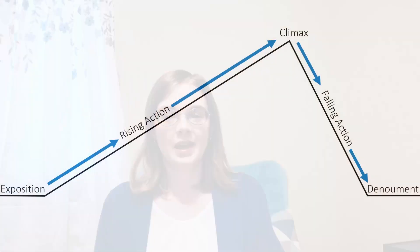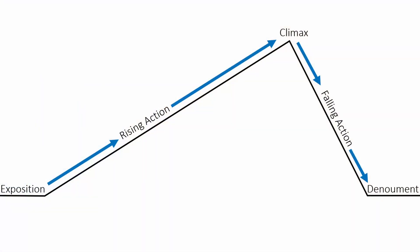Hello! Today we're going to be talking about the plot diagram. You may have seen this diagram before — it looks a little bit like a triangle or a mountain, and it kind of shows how the plot unfolds over the course of the story.